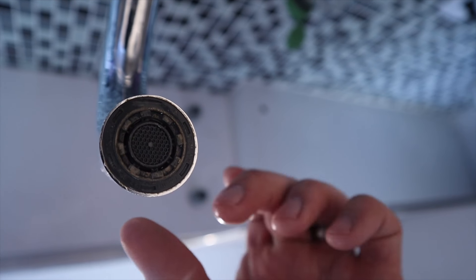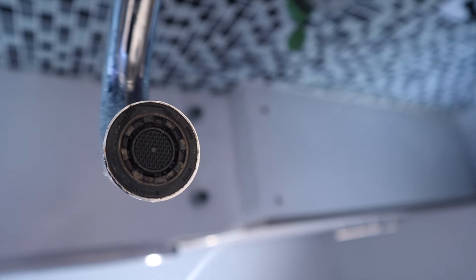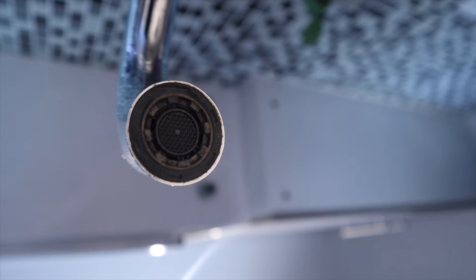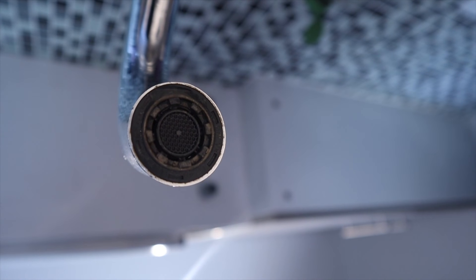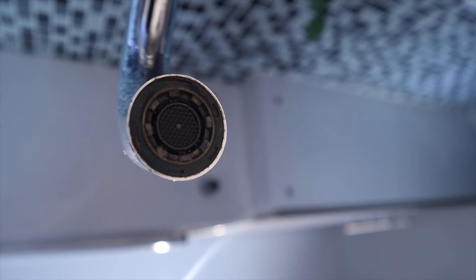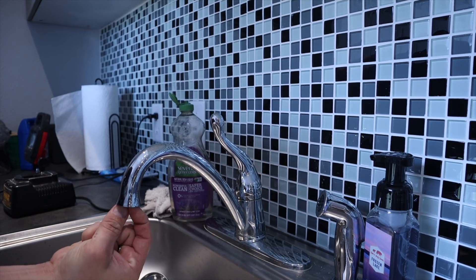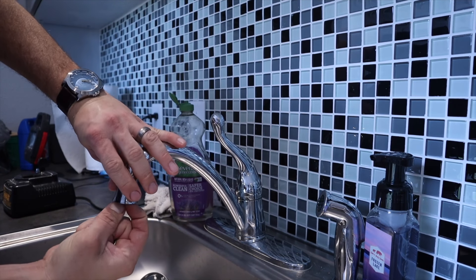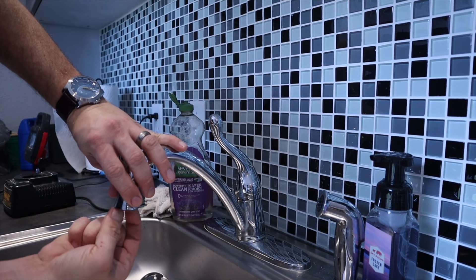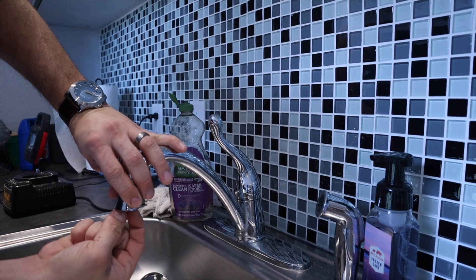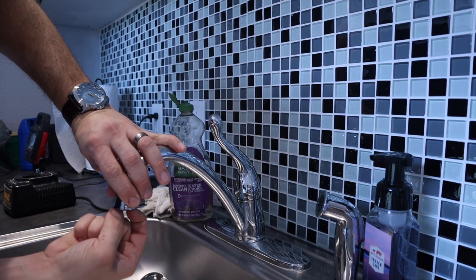So what you have to do is get a quarter. They actually make a Delta tool that you can use to take that out, but I'm going to get a quarter and see if I can't unscrew that. All right, so a quarter won't work, but I can actually just get my fingernails in there to twist and get this off. I'll show you once I get it off what it looks like.